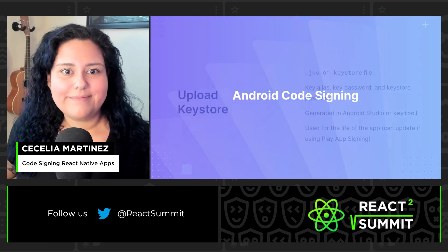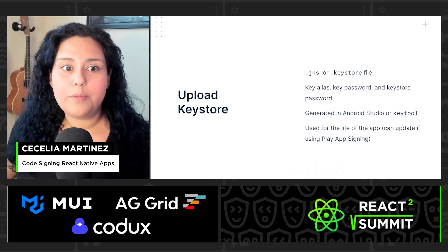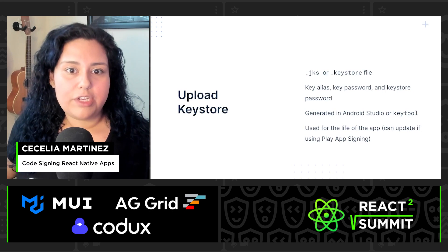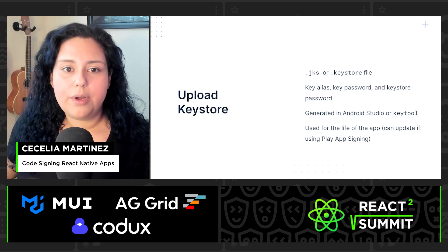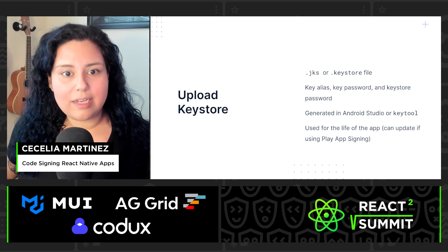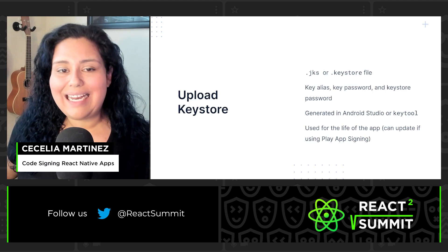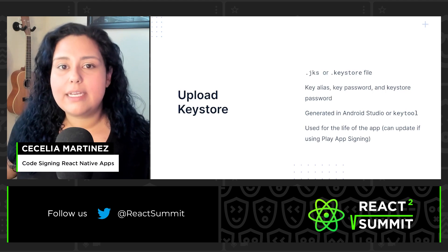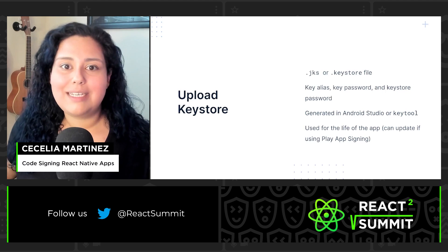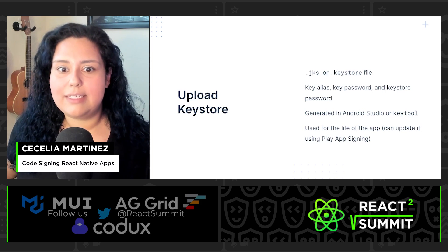Let's start with Android. To generate a signed bundle of your React Native app for Android, you'll need to generate an upload keystore. During the process of generating it, make sure that you take note of the keystore path, alias, keystore password, and key password. An upload keystore can be generated in Android Studio or by using Key Tool, which is a CLI tool that comes built into the Android Studio SDK.